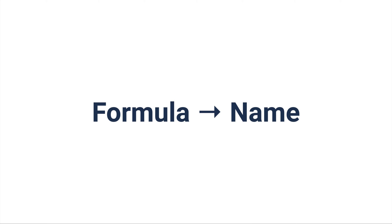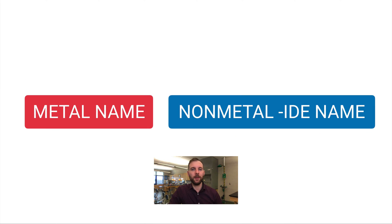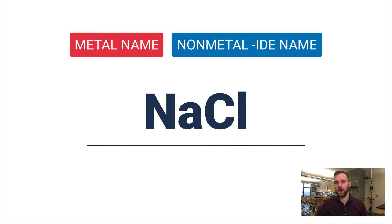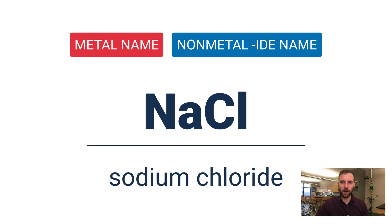Let's start with formula to name. If I give you the formula, can you write the name? The name of any binary ionic compound is just the metal name, a space, and then the non-metal's -ide name. If you need those -ide names, go back to that intro to names and formulas video. NaCl is maybe the most common binary ionic compound — table salt, sodium chloride. It's sodium and not chlorine but chloride, because chlorine in this situation is an ion.